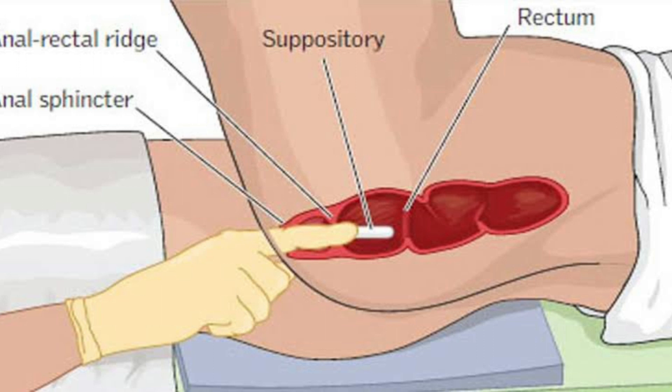Next we have the rectal route. By this route, drugs are introduced into the rectum. This route can be used for local as well as systemic action. Suppositories or ointments containing antiseptics, local anesthetics, and anti-inflammatory drugs are used as rectal preparations, which are given in piles or hemorrhoids and anal fissures. An enema can be used by this route to remove the constipation of the patient, because it irritates the rectal mucosa and results in evacuation of the bowel. Suppositories can be commonly used to remove constipation in babies and children.